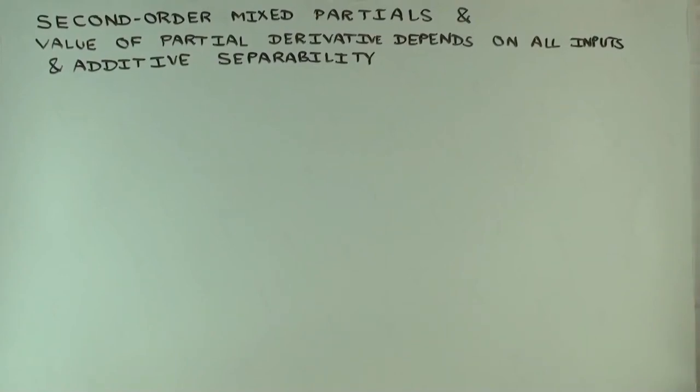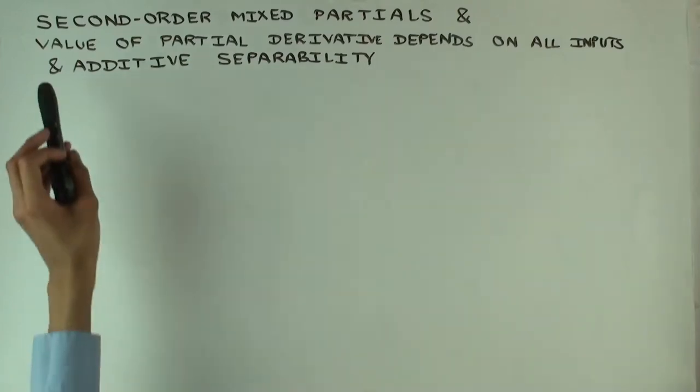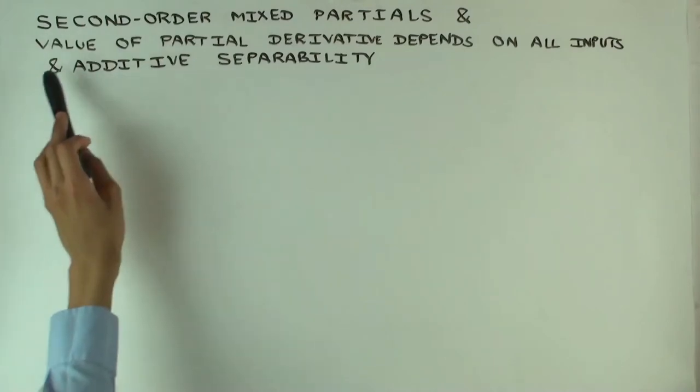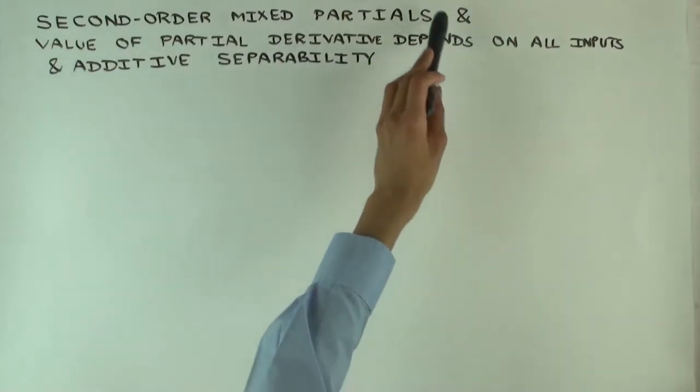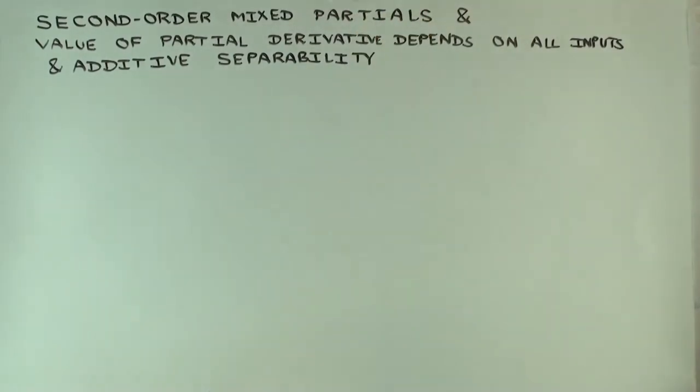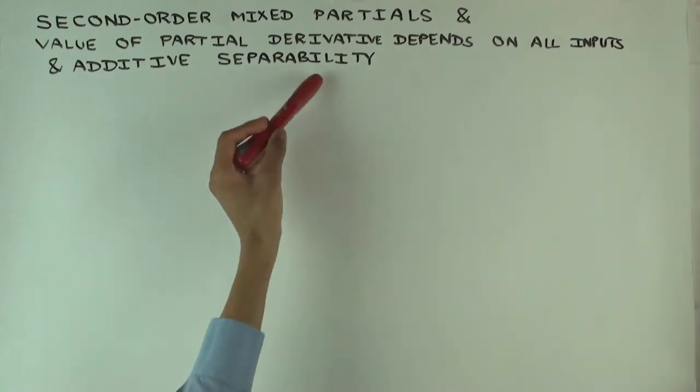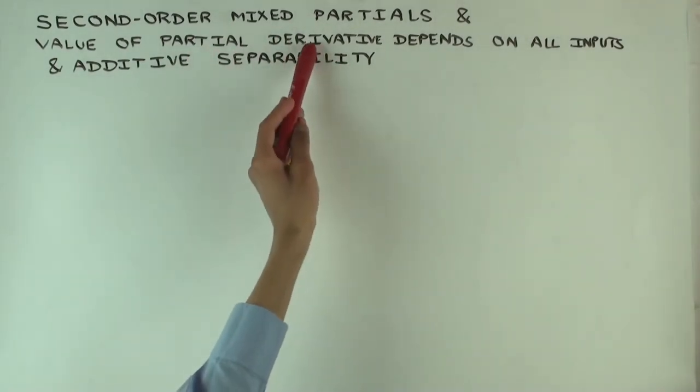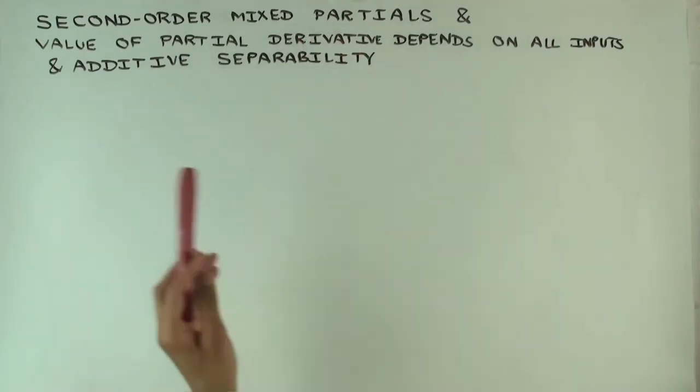So in this talk, I'm going to consider one subtlety associated with partial derivatives, which is that the value of the partial derivative depends on all the inputs. What that means is that if I have a function of multiple variables and I differentiate it with respect to one variable, then the partial derivative may depend on all the variables or may depend on the other variables as well. There's a separate video where I've done a simple example of that, but now I want to consider some subtleties associated with this subtlety.